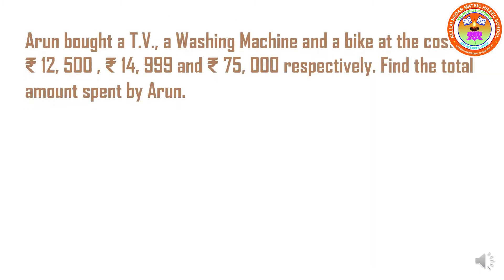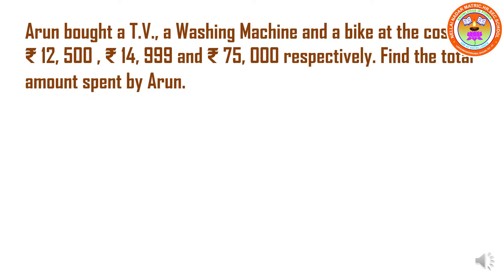Children, in this session we are going to learn about addition and subtraction based problems involving money. So now let us begin with the word problem. Arun bought a TV, a washing machine and a bike at the cost of Rs. 12,500, Rs. 14,999, and Rs. 75,000 respectively. Find the total amount spent by Arun.